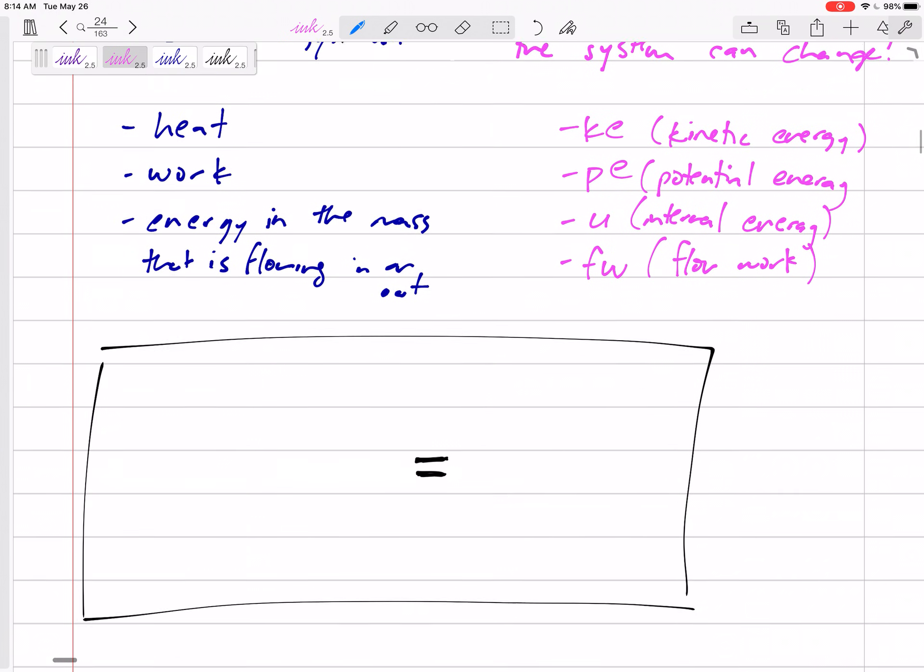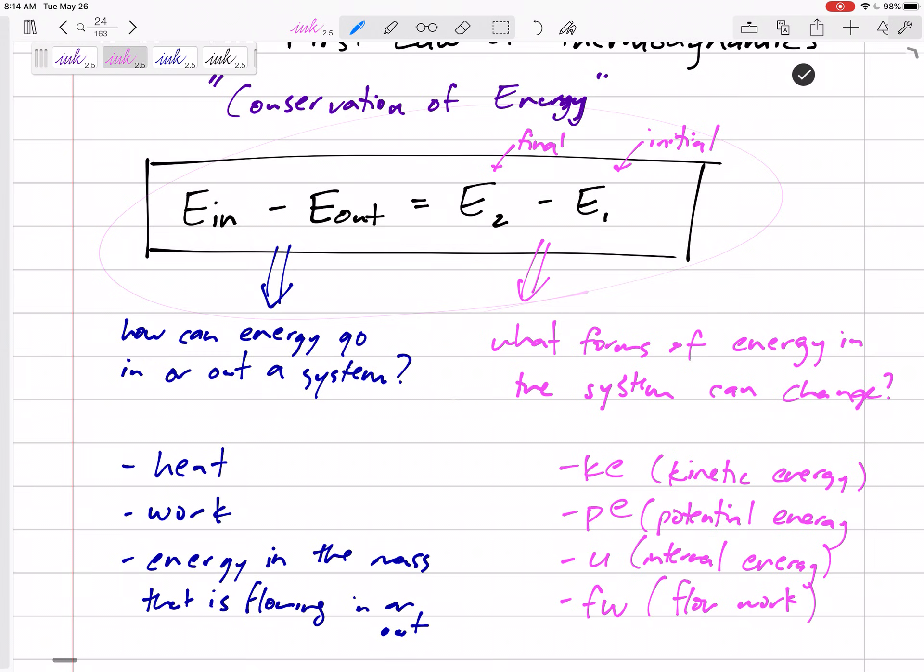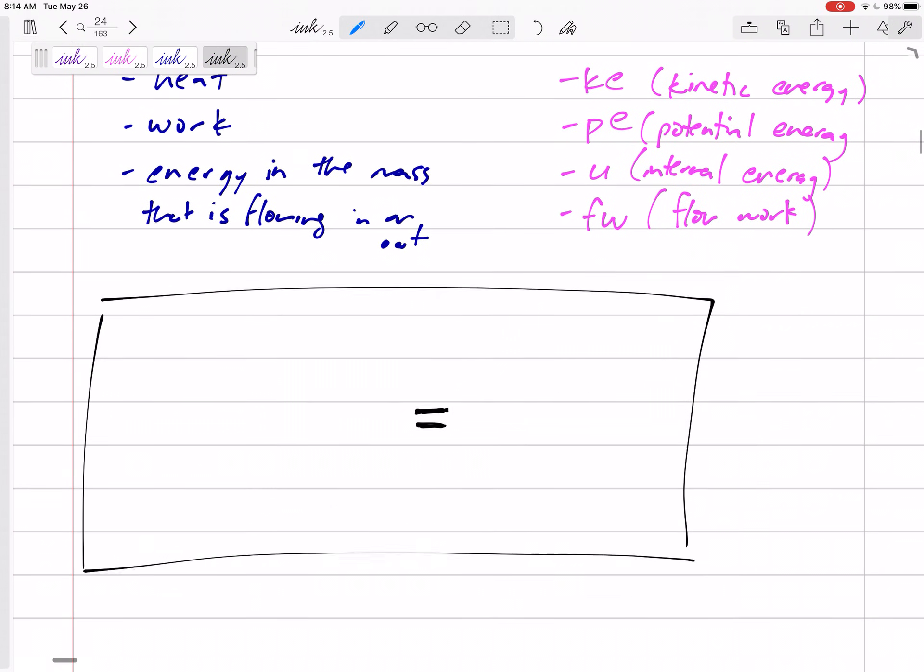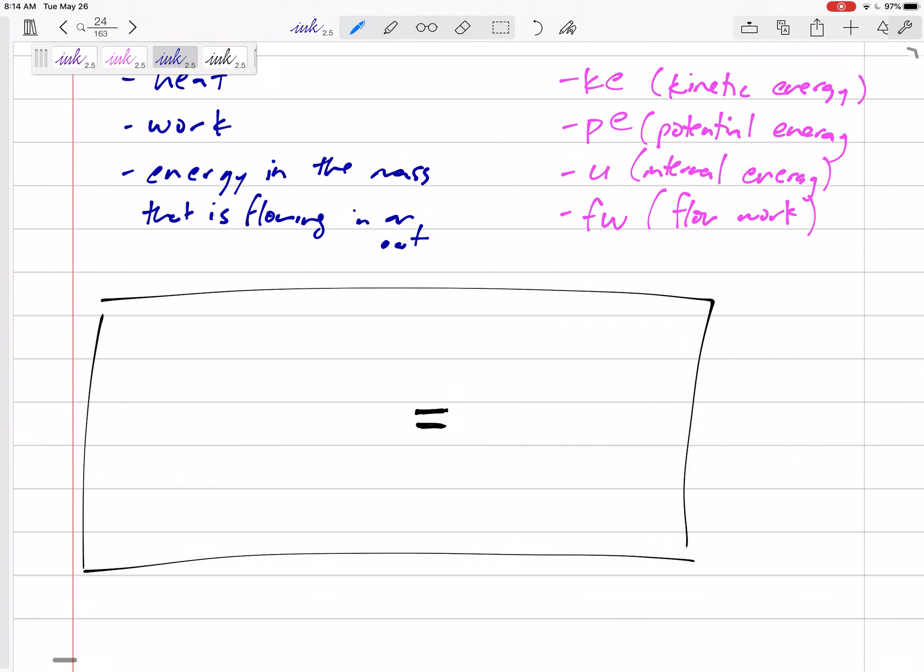So there we go. So let's rewrite our conservation energy equation with all these different types of energies. We might have heat transfer, maybe Q in or minus if it's Q out. We might have work, so we'll add work if it's going in, we'll subtract work if it's going out.